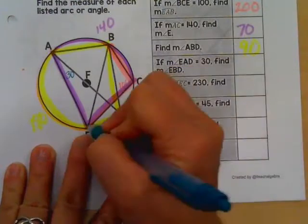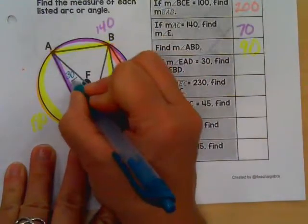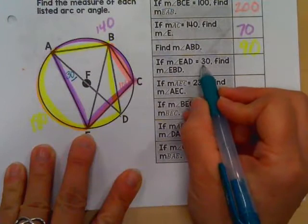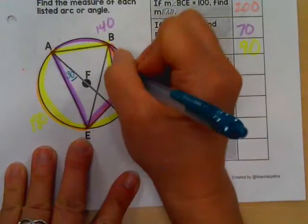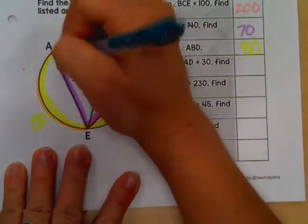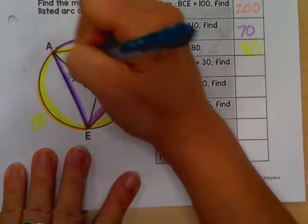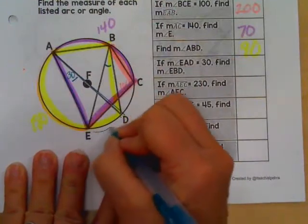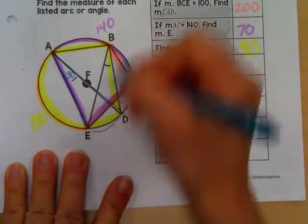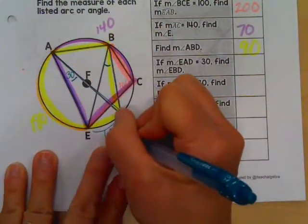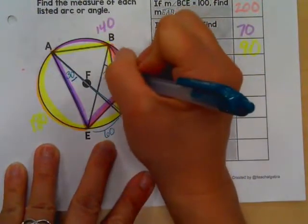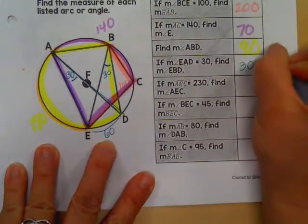Angle EAD, EAD, is this tiny little angle here. It's equal to 30. They want to find the measure of angle EBD. EBD is this little angle right here. Well, if you notice, this angle cuts this arc, ED. But so does this angle. So this angle has to be half of the arc, which is 60. And that means that this arc is 60. This angle is also 30. They intercept the same arc.